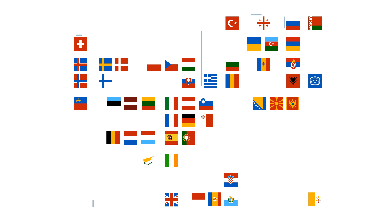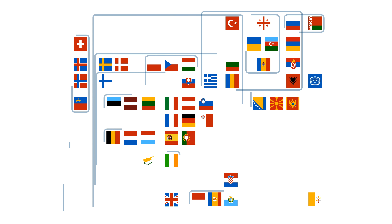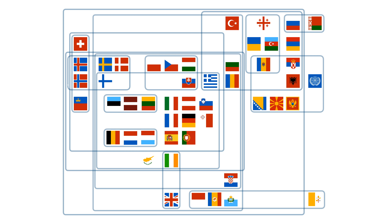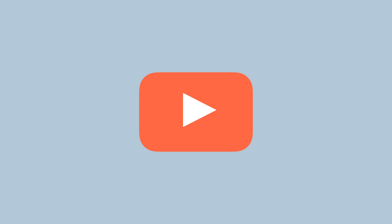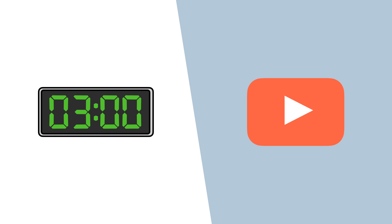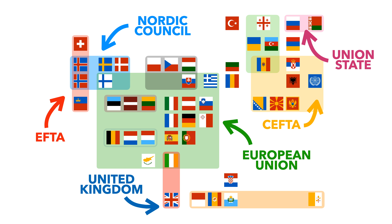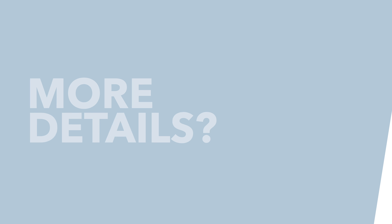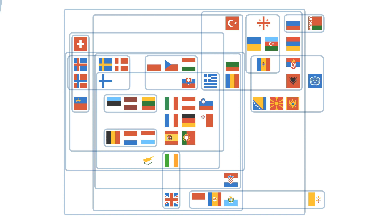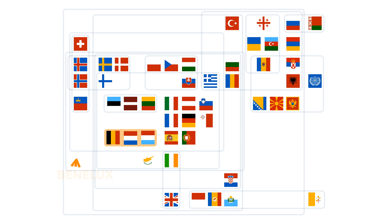It goes without saying really that this map of EU relationships is complicated. The problem is that we want to keep this video under three hours long, so we're going to be explaining the groupings pretty quickly. But if you'd like more details, then comment below, because we could do a whole series explaining groupings like Benelux, EFTA, and more.